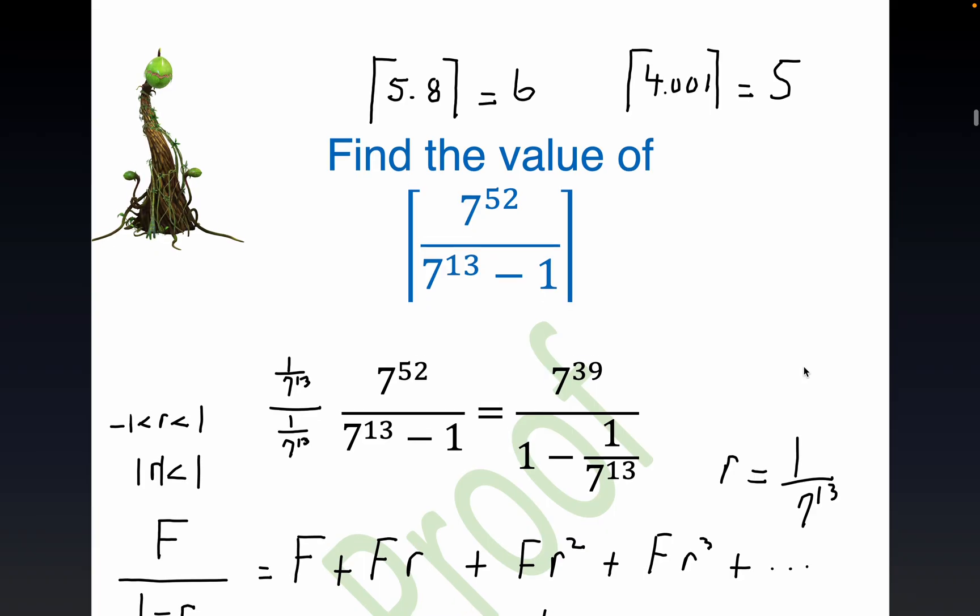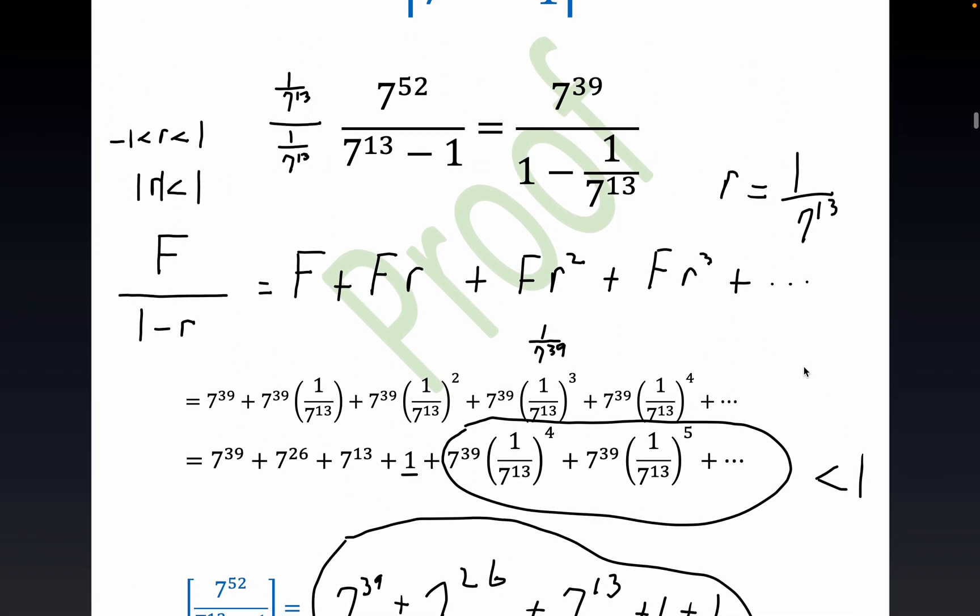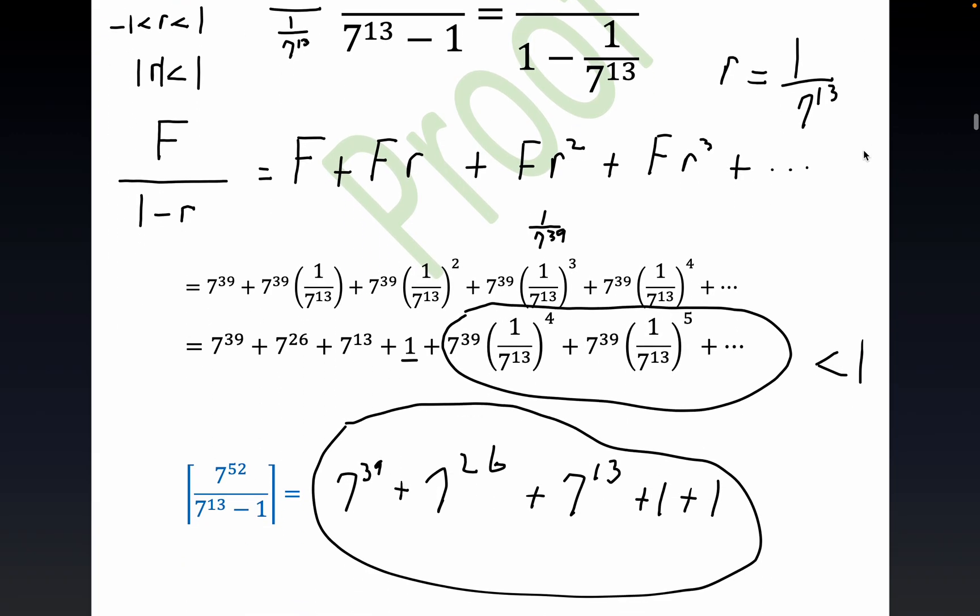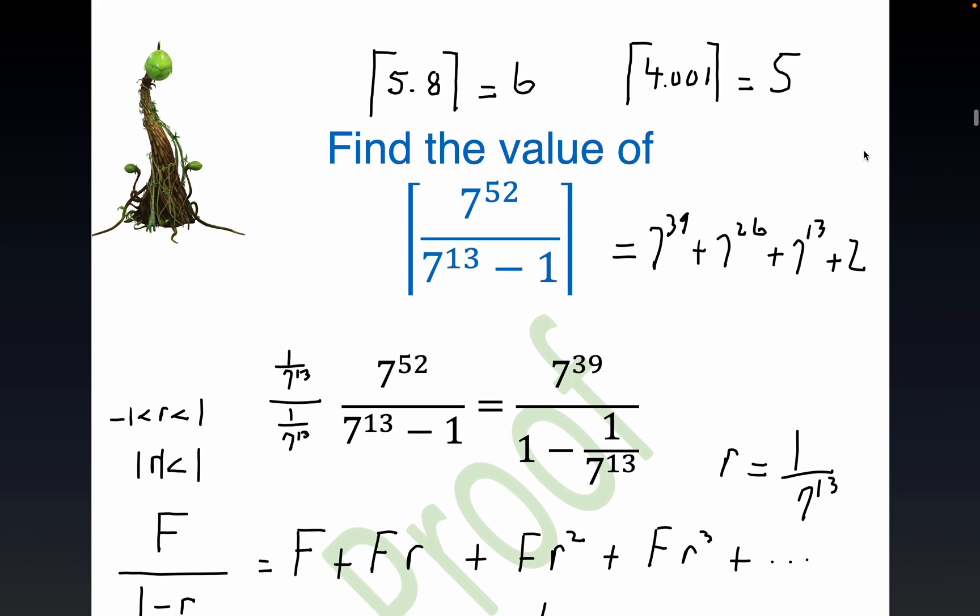Let me, while I'm here, I'll just go ahead and write it. 7^39. This would be equal to 7^39 plus 7^26 plus 7^13 plus 2. So I have the answer in its final form. Let me check, is that what I had down here? Yep. All right, y'all.